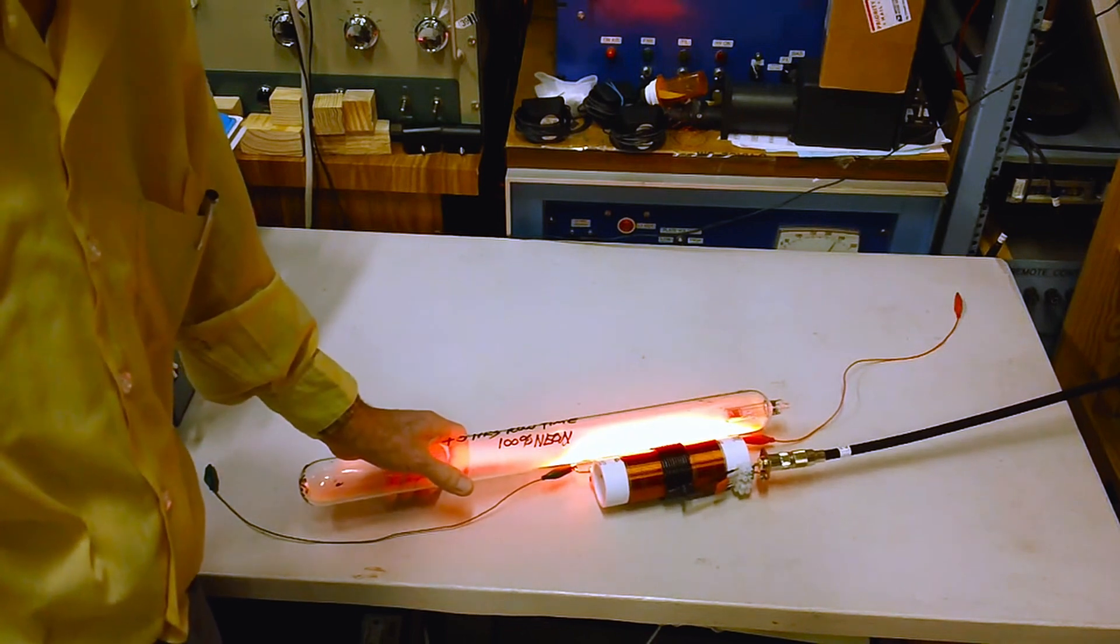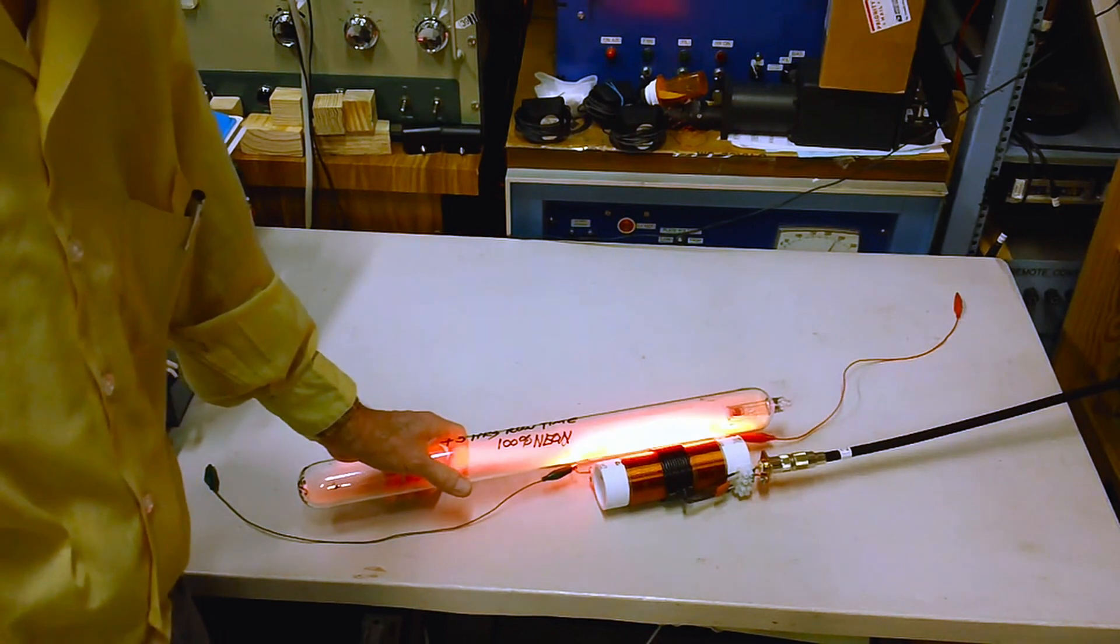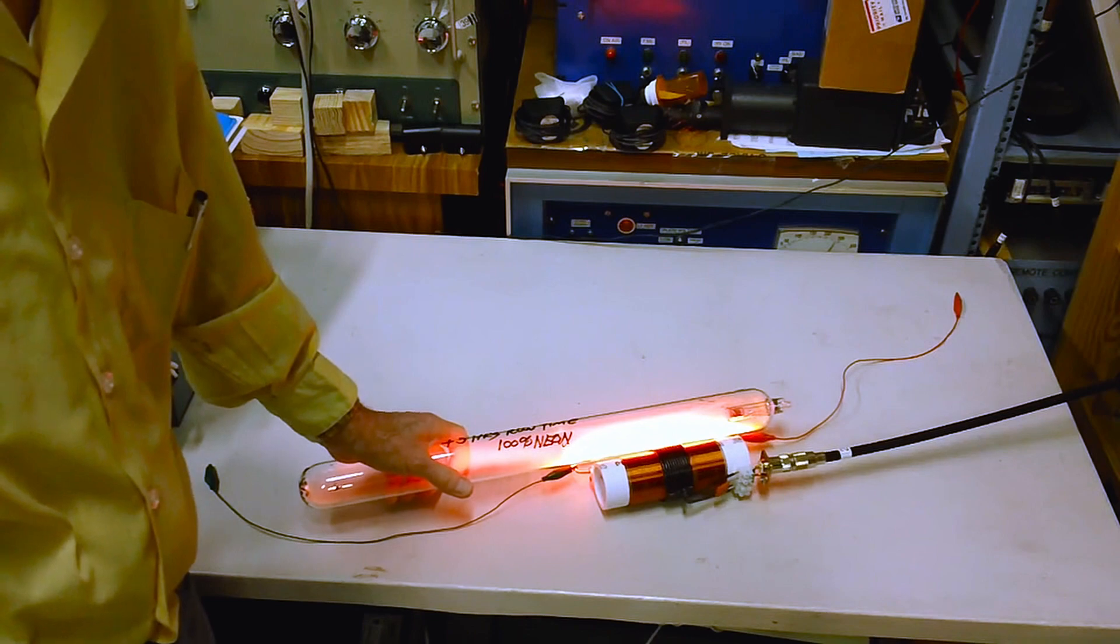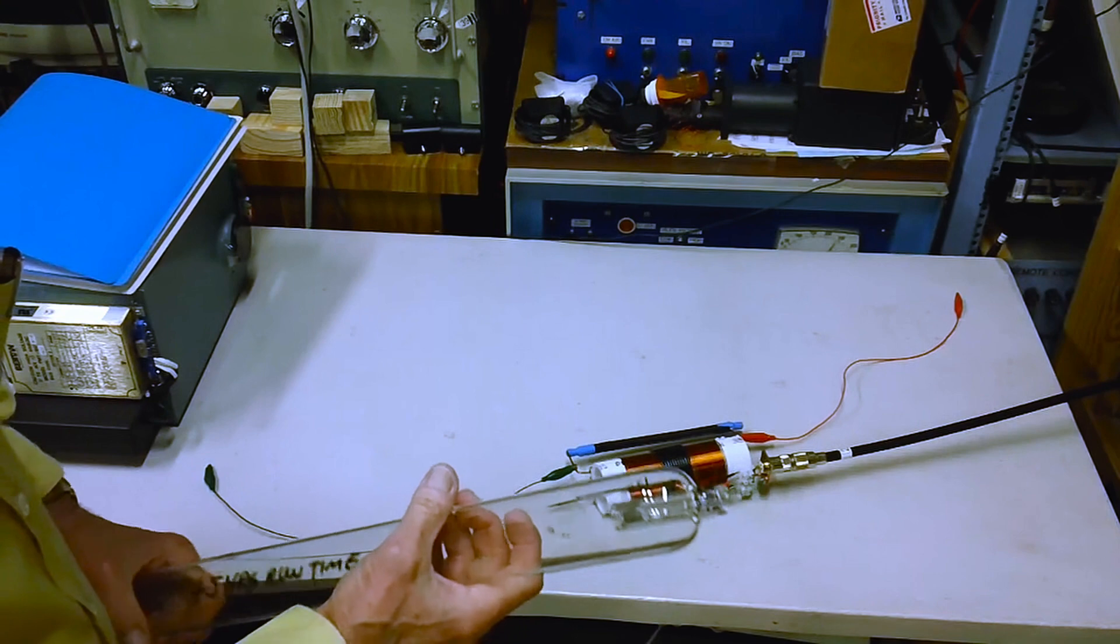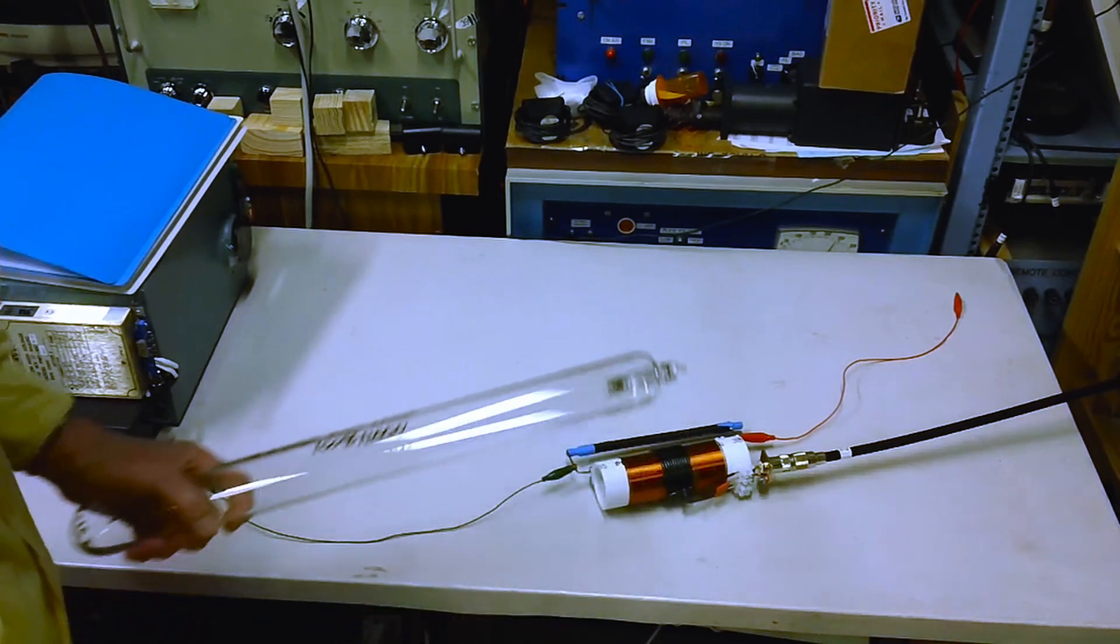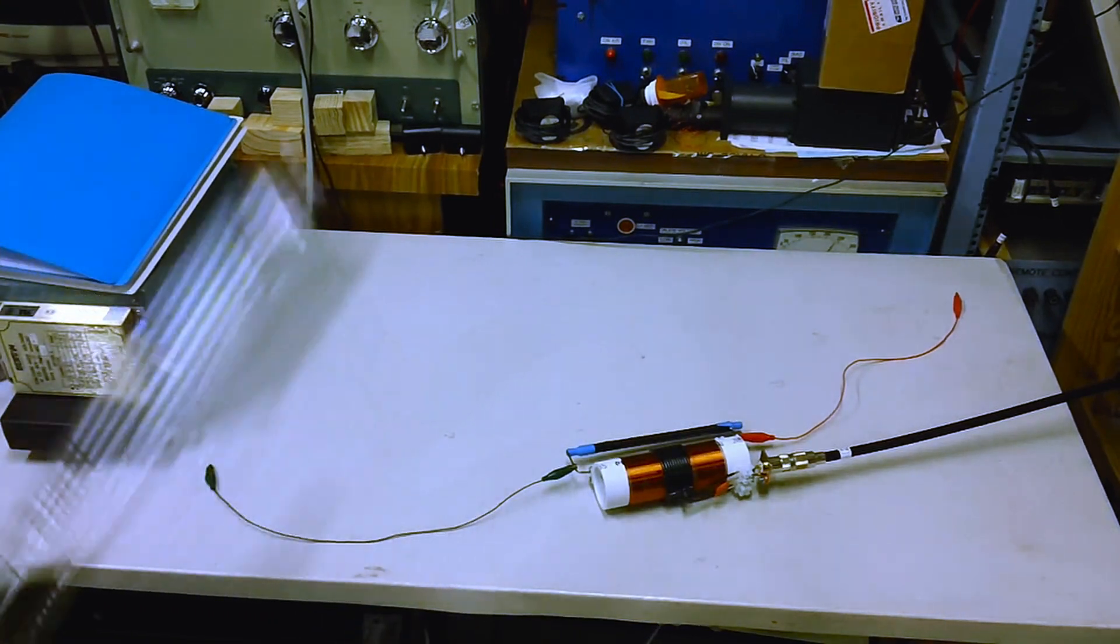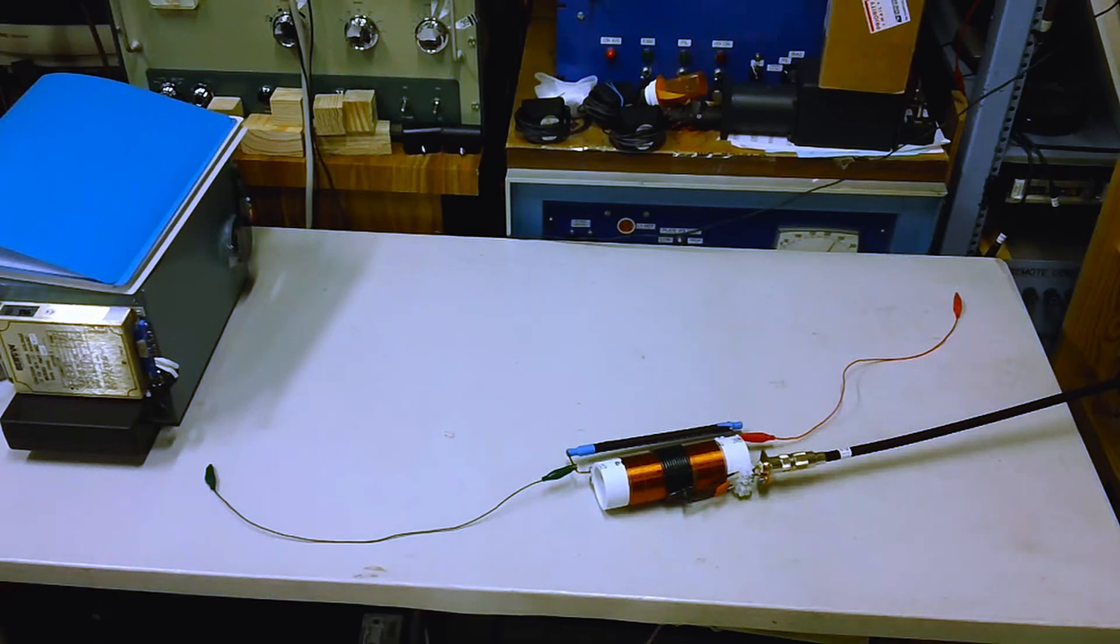If the fluorescent tube lit, but this SSQ-ST does not light during this test, then that indicates that most likely the SSQ needs to be pumped down and refilled with gas. If the fluorescent tube did not light, then that indicates that the coupler is probably bad.